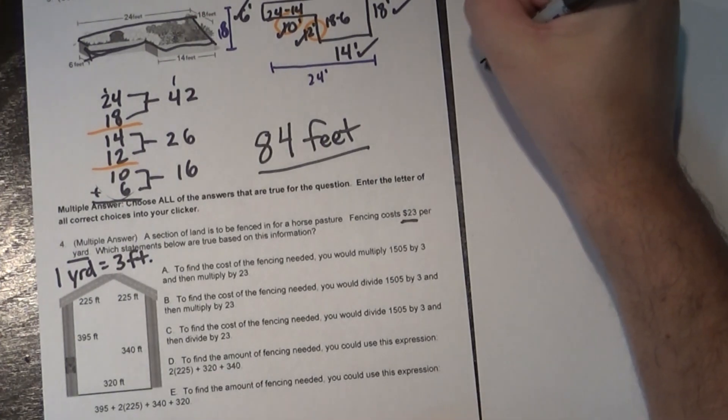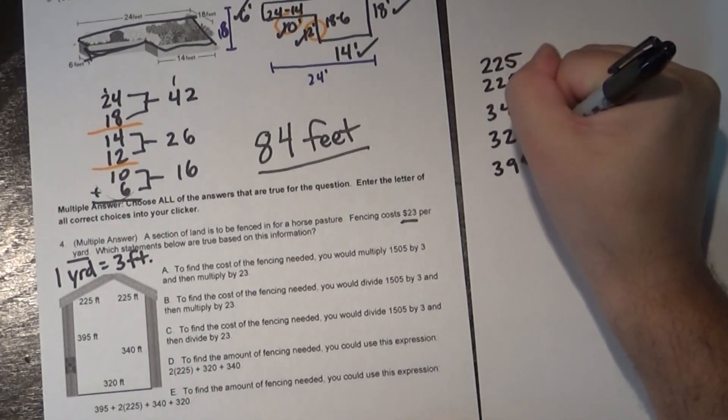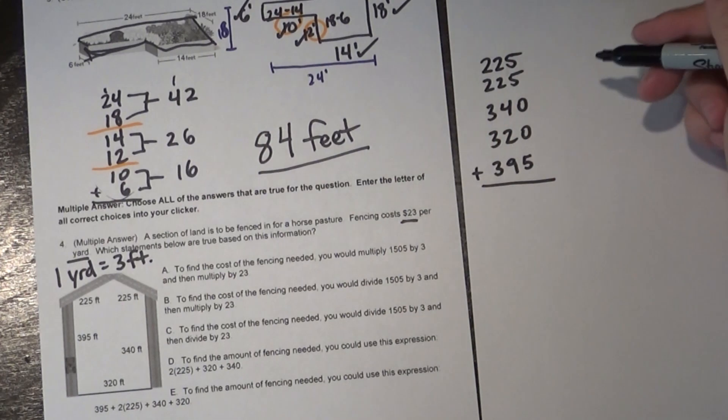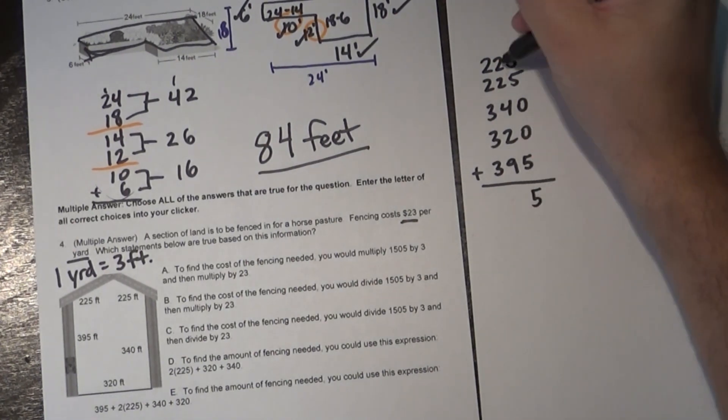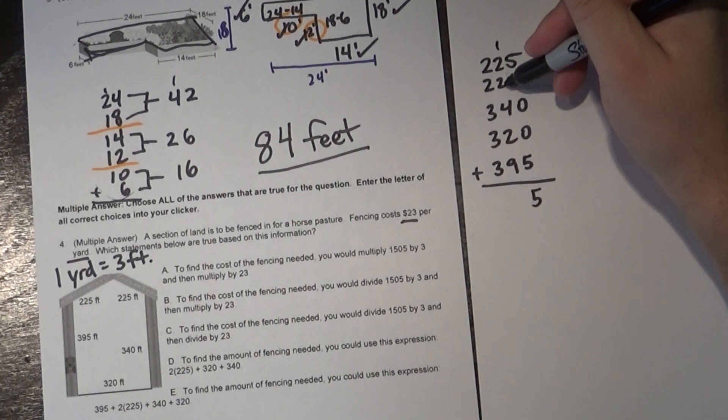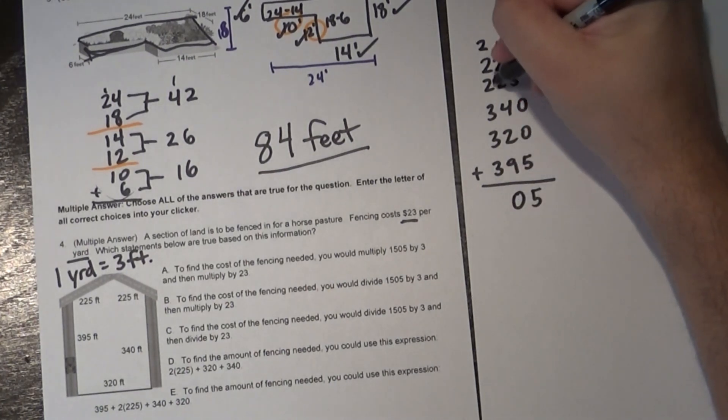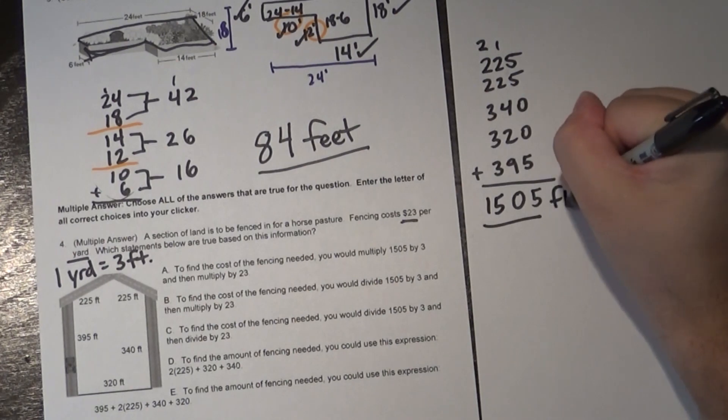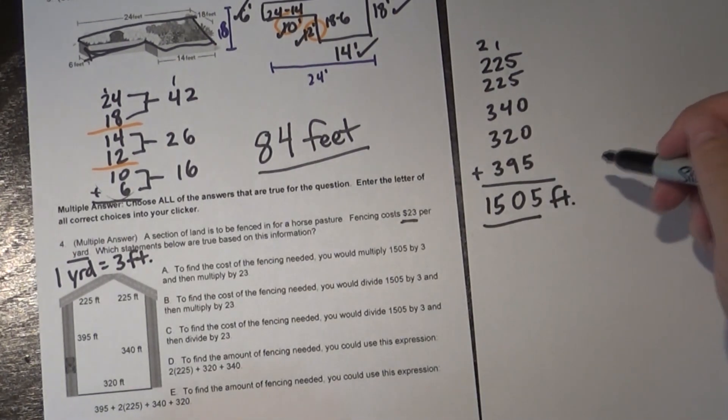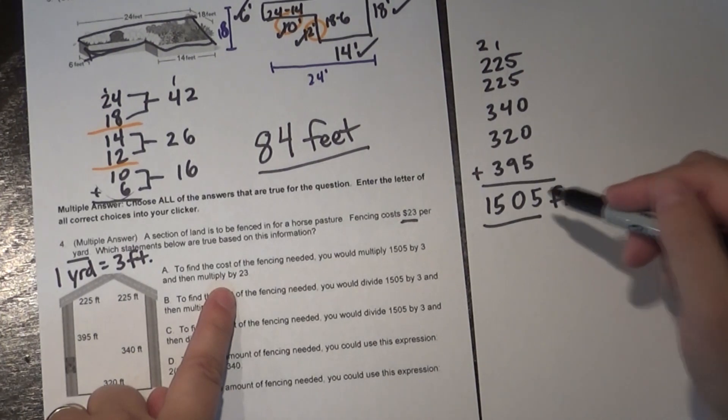So I'm going to take my measurements here for my pasture, which yes it looks like it's a house but it's not. Okay, so I'm going to take all those measurements. I have 225 plus 225, I'm just adding all the sides, 340, 320, and 395. So again probably not to scale here but we're going to add these up and that's going to tell me the measurement of the perimeter of the outside. So 5 plus 5 plus 5 that's going to give me 15. 1 plus 2 that's 3 plus 2 that's 5 plus 4 that's 9 plus 2 that's 11 plus 9 that's 20. And then 2, 4, 6, 7, 8, 9, 10, 11, 12, 13, 14, 15. Hey look at that. So they got 1,505 feet. That's the number they gave me. So think about it.